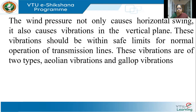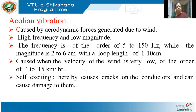These vibrations are of two types. The first is aeolian vibrations and the second is gallop vibrations. Aeolian vibration is caused by aerodynamic forces generated by the wind. These are of higher frequency and low magnitude. The frequency can be anything from 5 to 150 hertz and the magnitude is around 2 to 6 centimeters. These vibrations are in the vertical plane and are very common when the wind velocity is low, around 4 to 15 kilometers per hour.